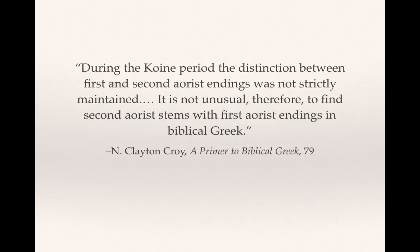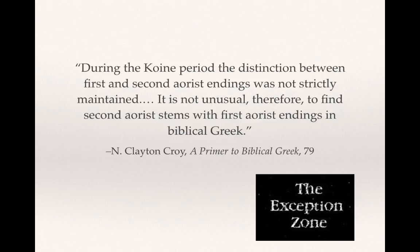Clayton Croy explains that during the Koine period, the distinction between first and second aorist endings was not strictly maintained. It is not unusual, therefore, to find second aorist stems with first aorist endings in biblical Greek. What this means is that there will be first aorist forms with second aorist endings, and second aorist forms with first aorist endings — they may have the alpha and then the personal ending but not the sigma-alpha. You'll see some examples in the exercises, but it is something to be aware of.